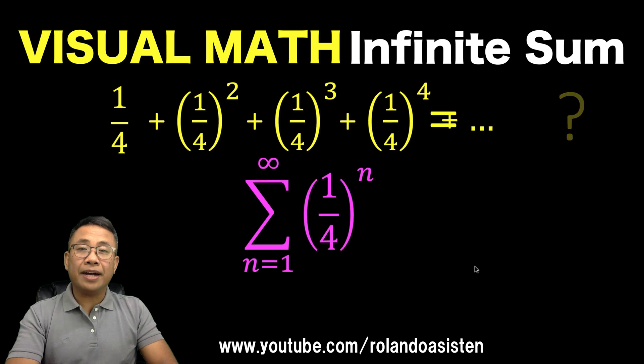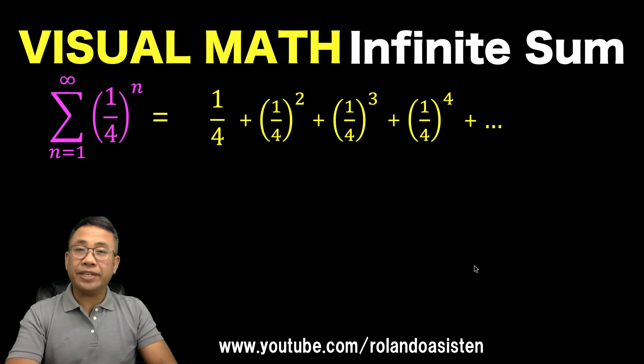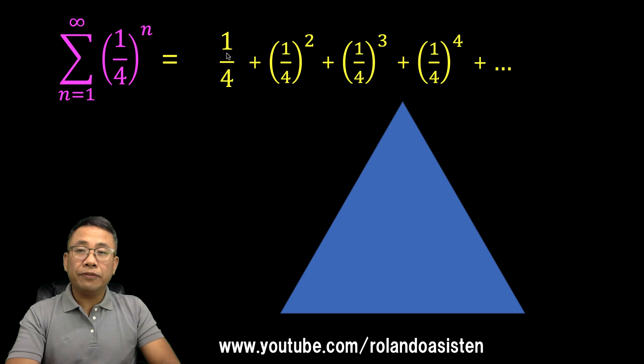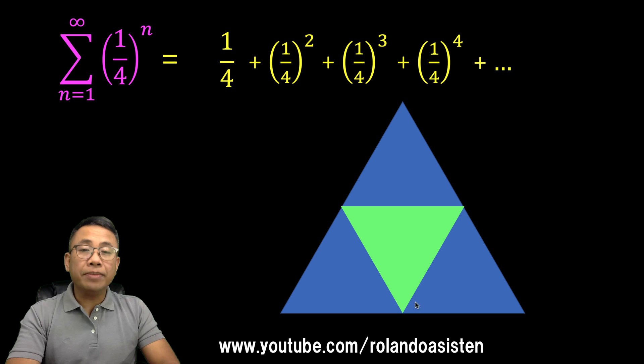So what is the sum of this infinite geometric series? Let's begin by visualizing first our first add-on here, 1/4. If you have this blue equilateral triangle and divide that triangle into four equal parts, we have 1, 2, 3, 4, and we take one part out of those four parts, then the area of this green triangle is this 1/4.